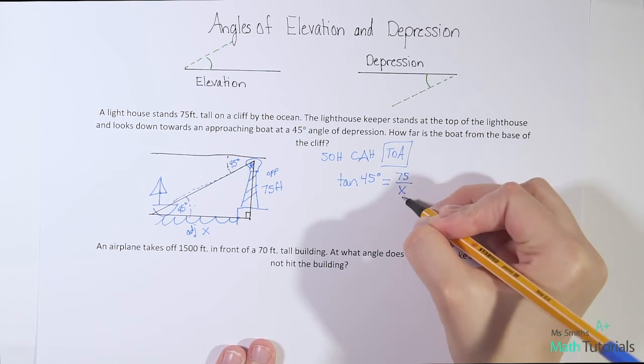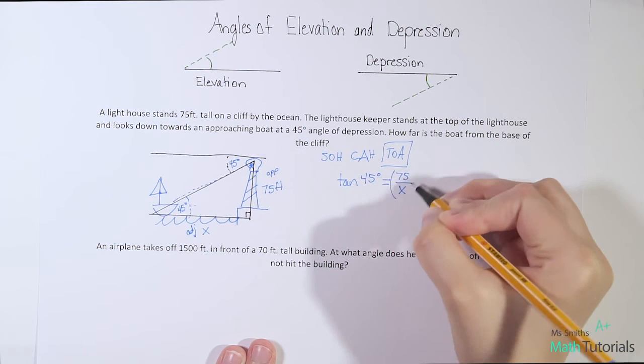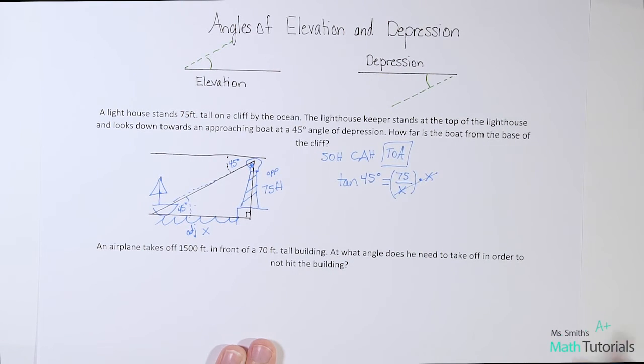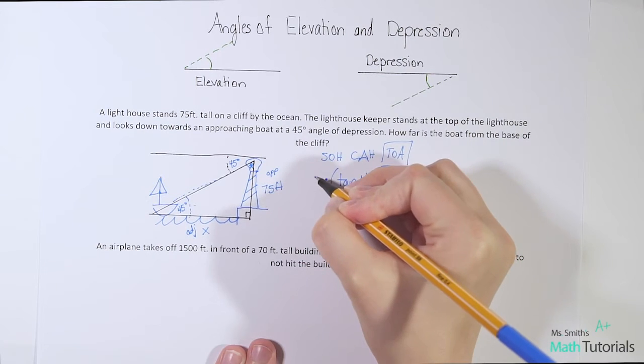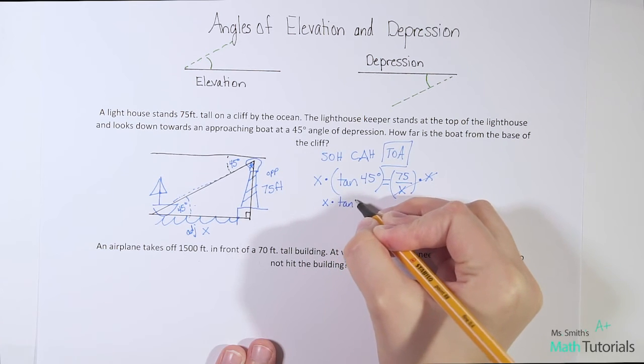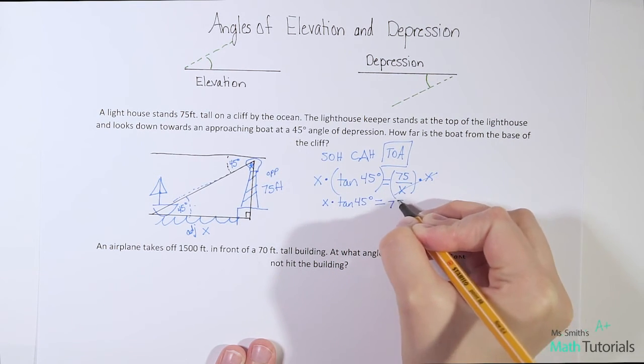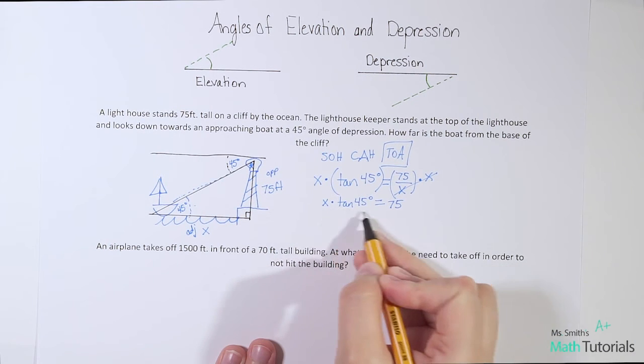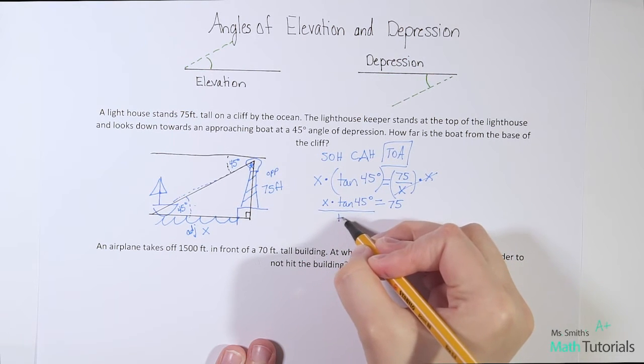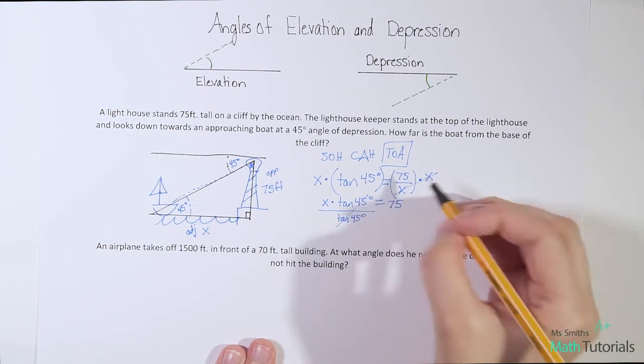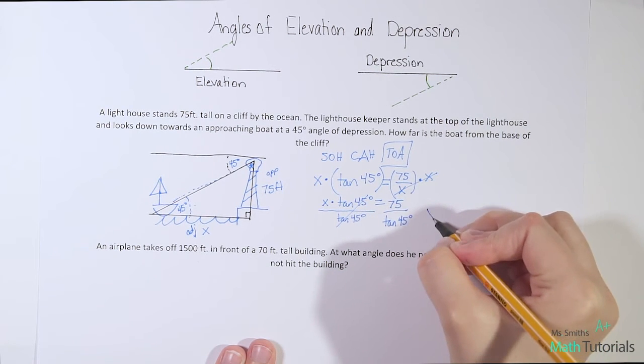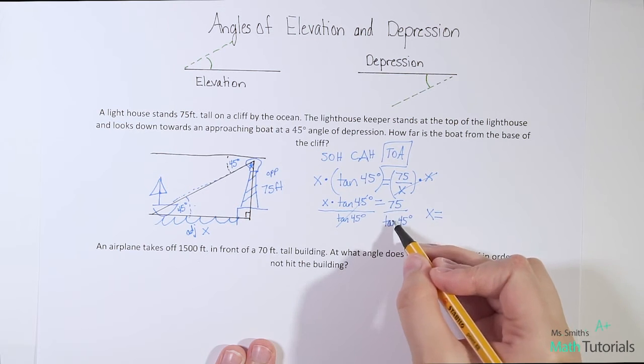We can get rid of any fraction by multiplying by the denominator, in this case x. That cancels out, but if I do that to one side, I have to do it to the other. So I've got x times tan of 45 degrees equals 75. If I want to get x alone, I can divide by tan of 45 degrees. If I do that to one side, I do it to the other. So x equals 75 divided by tan of 45.